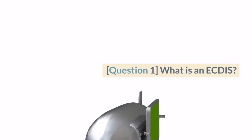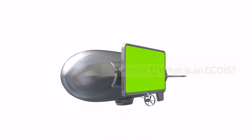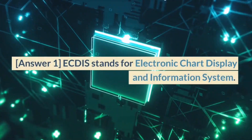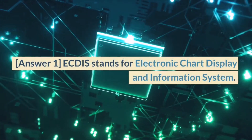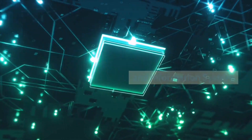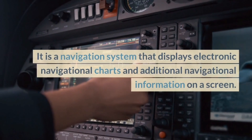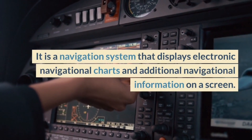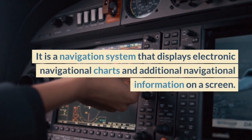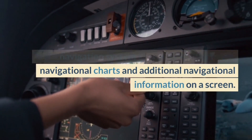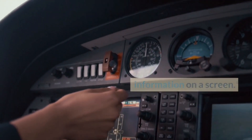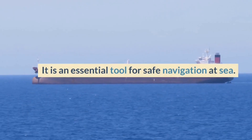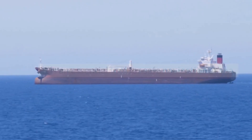Question 1. What is an ECDIS? Answer 1. ECDIS stands for Electronic Chart Display and Information System. It is a navigation system that displays electronic navigational charts and additional navigational information on a screen. It is an essential tool for safe navigation at sea.